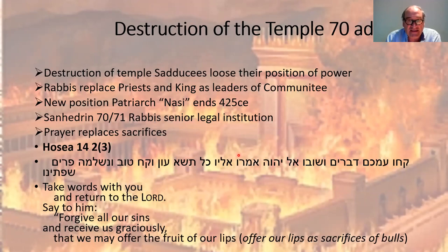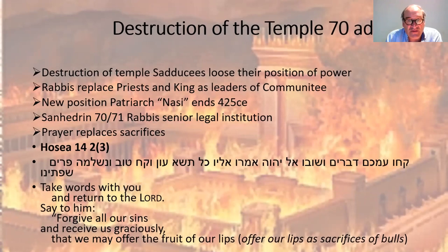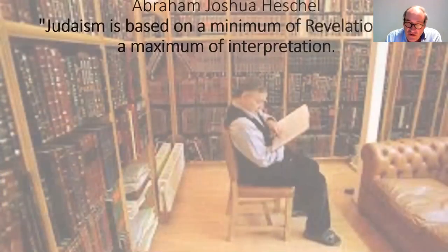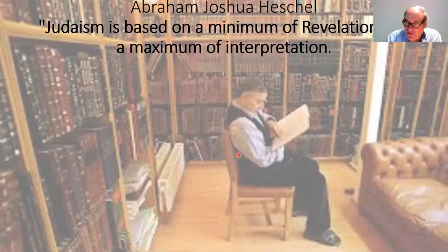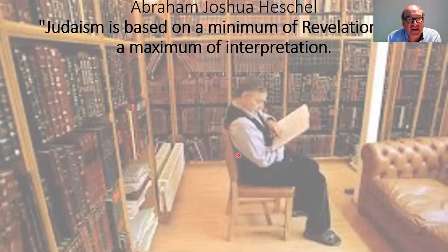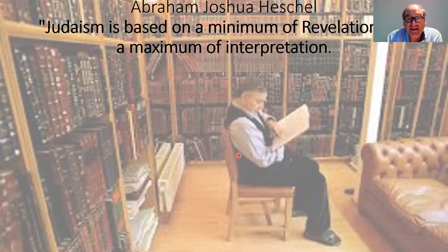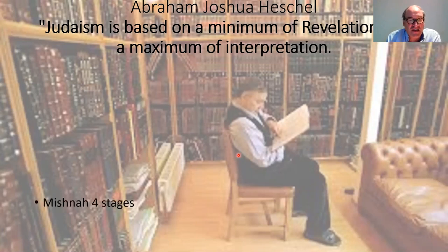One of the great Jewish scholars of the 20th century — a philosopher, theologian, leader, and civil rights leader in the 1960s who famously walked hand in hand with Martin Luther King — says Judaism is based on the minimum of revelation: the basis, the Torah, the oral writings, and the maximum of interpretation. Two thousand years of reading, understanding, and interpreting the text is the basis, and that existed even at the time of Jesus.